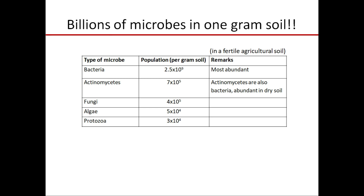Out of all the microbial groups present in the soil, bacteria are the most abundant or most dominant, followed by actinomycetes. Actinomycetes are also bacteria — they are filamentous bacteria. Earlier they were classified differently, but bacteria and actinomycetes are both prokaryotic microorganisms, so their counts are combined. After bacteria come fungi, then algae, then protozoa, then nematodes.